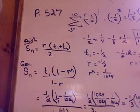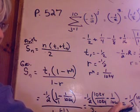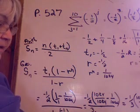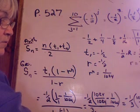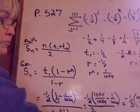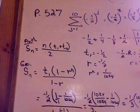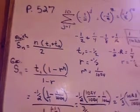And, again, I can simplify this by dividing 3 into that number, and I get negative 341 over 1024. And there you go for the answer.